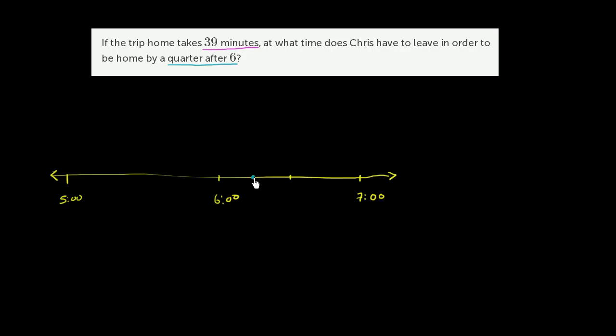And if we wanted to specify what time a quarter after 6 is, a quarter of the way between 6 and 7, we know there are 60 minutes in an hour. So this distance is 60 minutes. A quarter of 60 is 15 minutes. So this time right over here is 6:15. And that's when Chris has to be home.